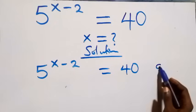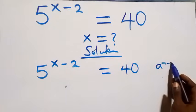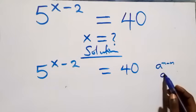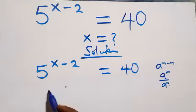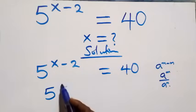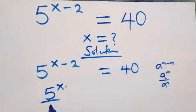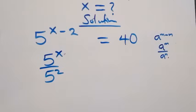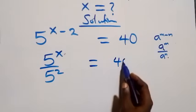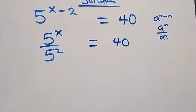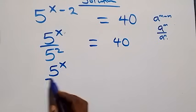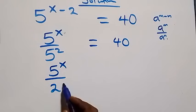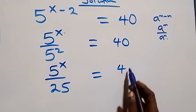This follows from the law where a raised to power n minus n can be written as a raised to power n over a raised to power n. So this becomes 5 raised to power x over 5 squared, which equals 40. We can write 5 squared as 25, so we have 5 raised to power x over 25 equals 40.